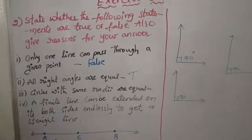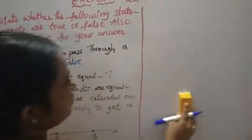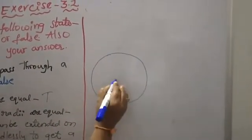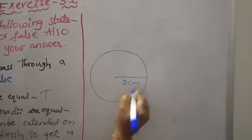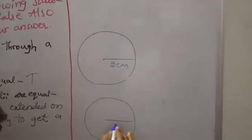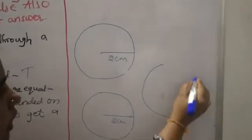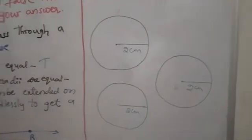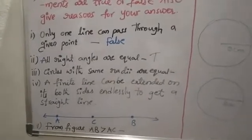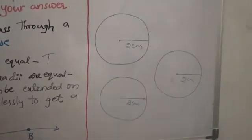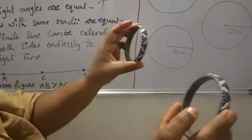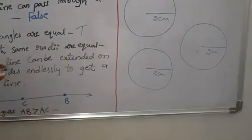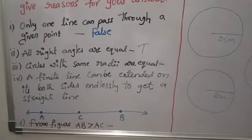Next: circles with the same radius are equal. With the same radius, we can draw many circles — for example, circles each with radius 2 centimeters. All those circles with the same radius are equal. My bangles are the best example: two circles of the same radius are equal. So circles with the same radius are equal — true.